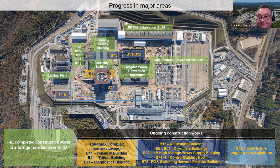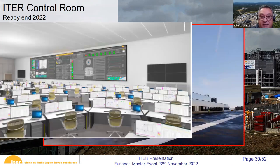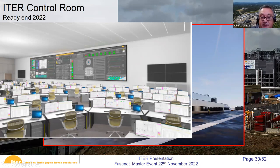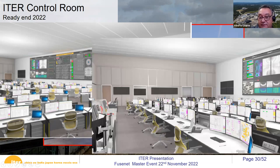This is the ITER control room — recently completed. It has a long display wall: on the right are machine and engineering parameters for engineers, on the left are plasma physics parameters for physicists, and in the middle is the workstation for the physicists and engineers actually running the experiments.